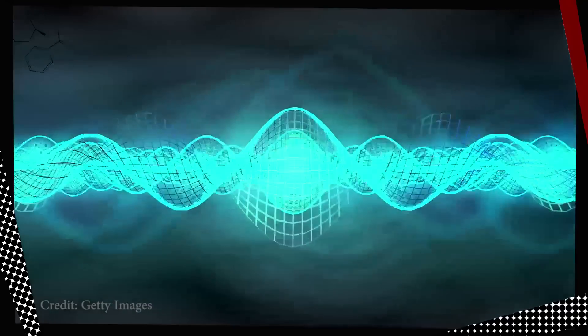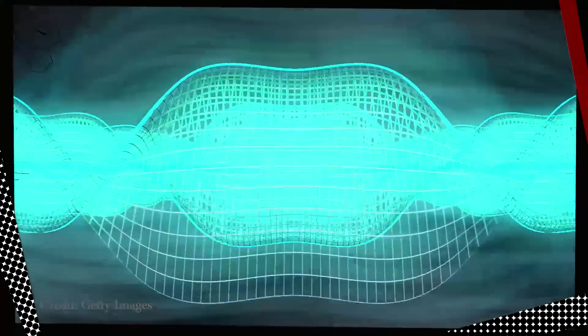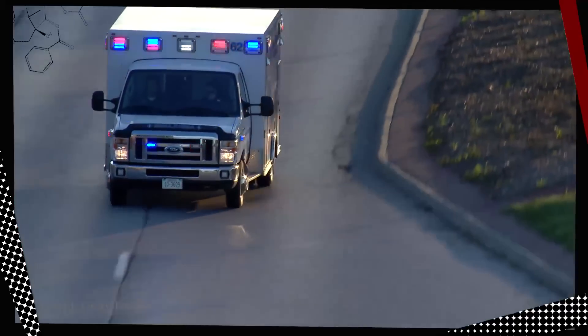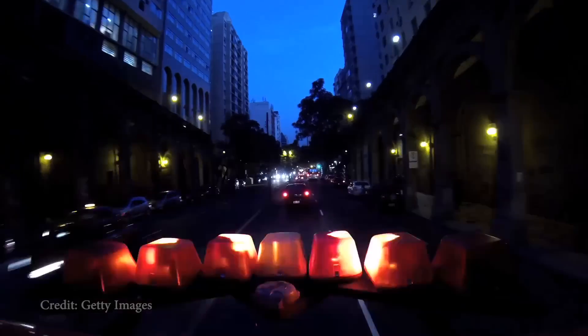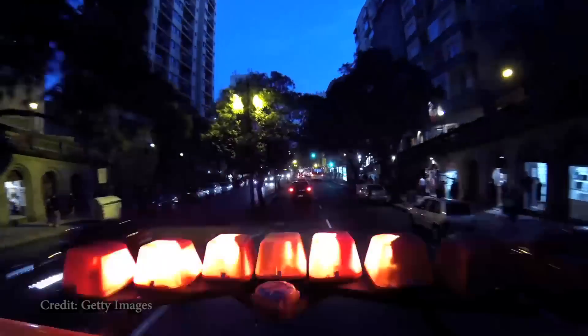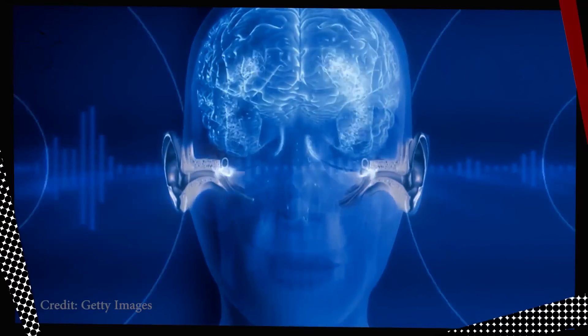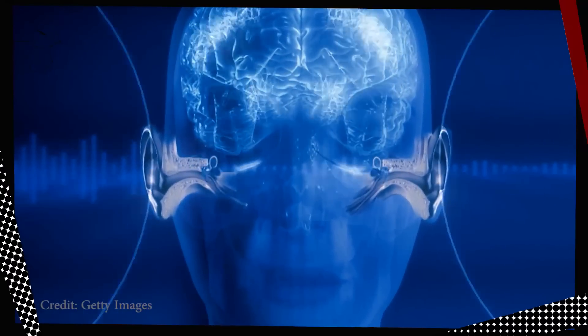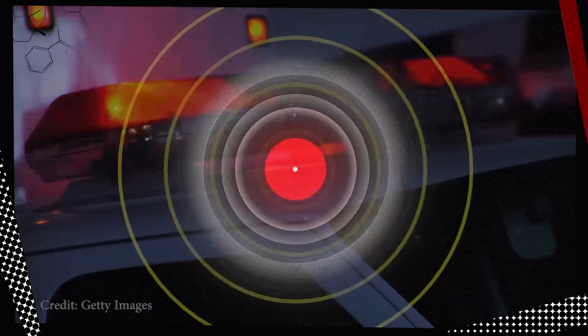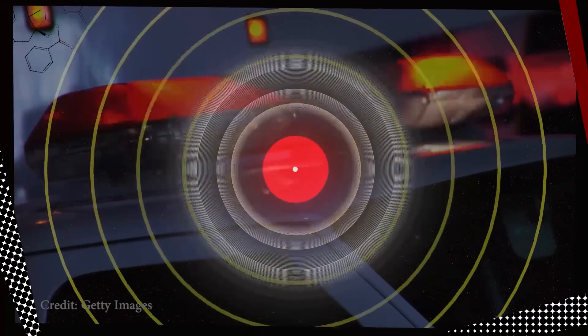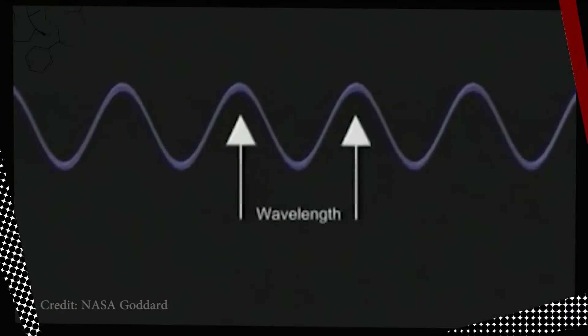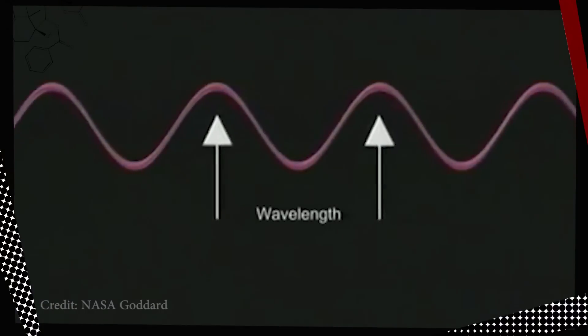You see since light travels in waves much like sound it's subject to a Doppler effect just like sound waves are. You know the Doppler effect you hear it every time an ambulance passes by. When an ambulance approaches the sound of its siren seems to get higher in pitch as the sound waves are propelled toward your ears and wavelengths are slightly shortened. After it passes the pitch drops as it drags the sound waves away pulling them away from your ears and stretching them out.